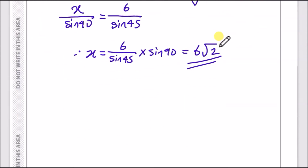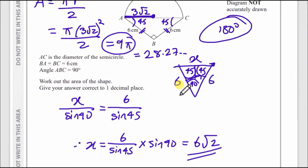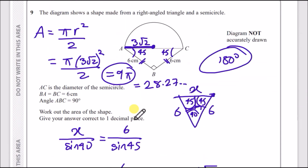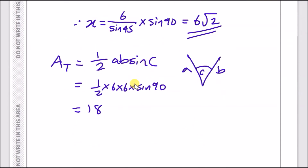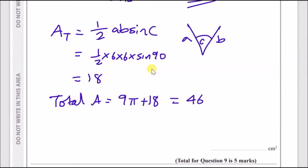Now the area of the triangle using ½ab sinC: ½ × 6 × 6 × sin90° = ½ × 36 × 1 = 18. So the total area is 9π + 18, which to one decimal place gives 46.3. That's question 9 done.